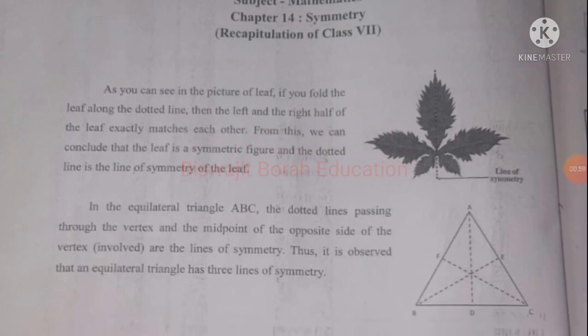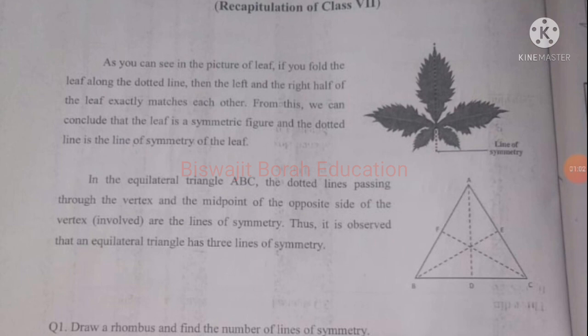In this equilateral triangle ABC, the dotted lines passing through the vertex and the midpoint of the opposite side are the lines of symmetry. It is observed that an equilateral triangle has three lines of symmetry. The lines AD, BE, and CF each divide the triangle into two equal halves, so these are the three lines of symmetry of the equilateral triangle.